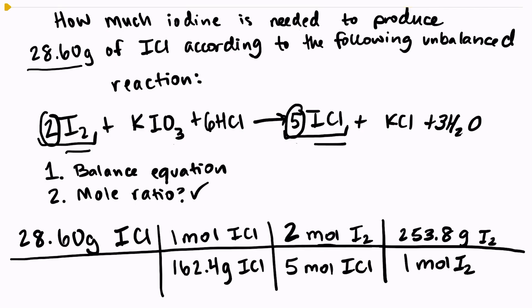And all that I have to do now is just simplify everything in my calculator. So I have 28.6 times 2 times 253.8 divided by 162.4 divided by 5, which gives me a mass of 17.88 grams of I2. So it takes 17.88 grams of iodine to produce 28.60 grams of iodine chloride.